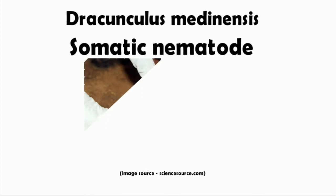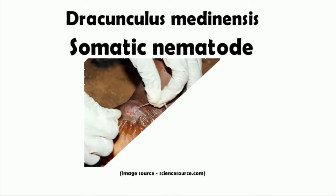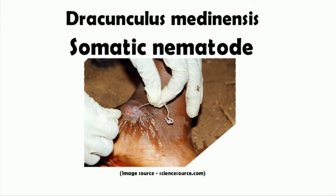So Dracunculus medinensis is a somatic nematode. Before going into detail, I would like to show you this picture. As you can see, a person is trying to extract an adult worm from the ankle of a person. Extracting a worm is not so simple as it seems, because the worm may be wrapped around important structures such as blood vessels or nerves, and when you try to pull it, it may damage them. So you need to carefully extract the worm.